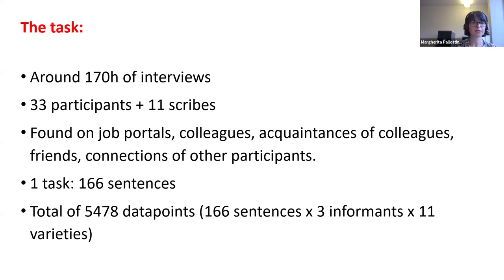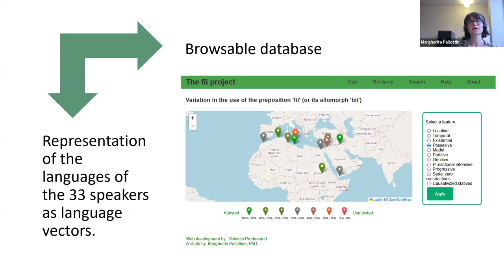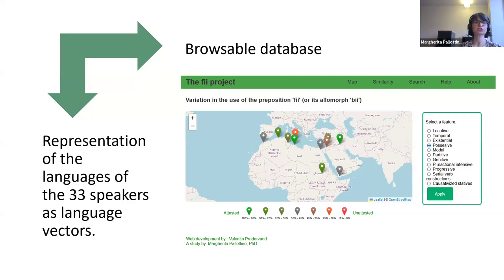For informants living abroad, I ensured they had lived until the end of high school in their country of origin and had been schooled in only one country. One task contained 166 sentences, yielding a total of 5,478 data points — precisely 166 times three informants times 11 varieties. The outputs include a browsable database showing where different functions of fee are used on a map and searchable by sentence, and a representation of the 11 varieties as language vectors.